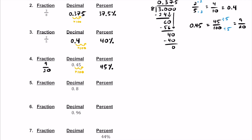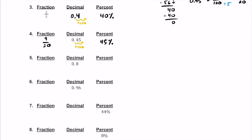For number 5, we have this decimal of 0.8. If we read this, we can also read it as 8 tenths. So literally it's going to be 8 over 10. We can simplify this by a factor of 2 — that's their GCF. So if we do that, we're going to get 4 over 5. So our simplified fraction is 4 fifths.